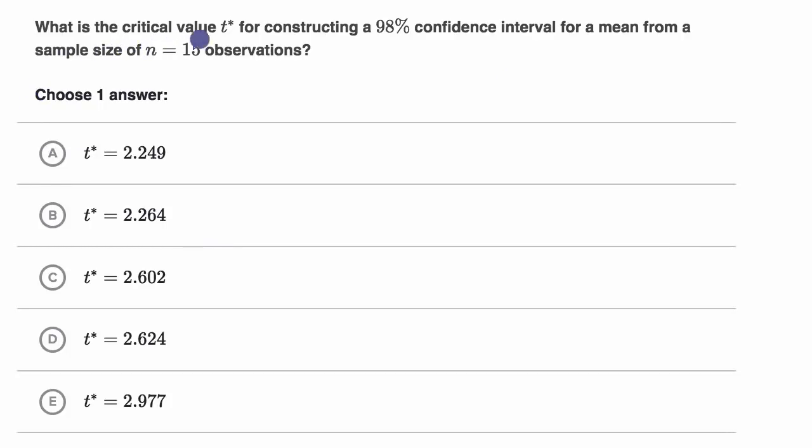We are asked what is the critical value T star (or T asterisk) for constructing a 98% confidence interval for a mean from a sample size of n equals 15 observations?